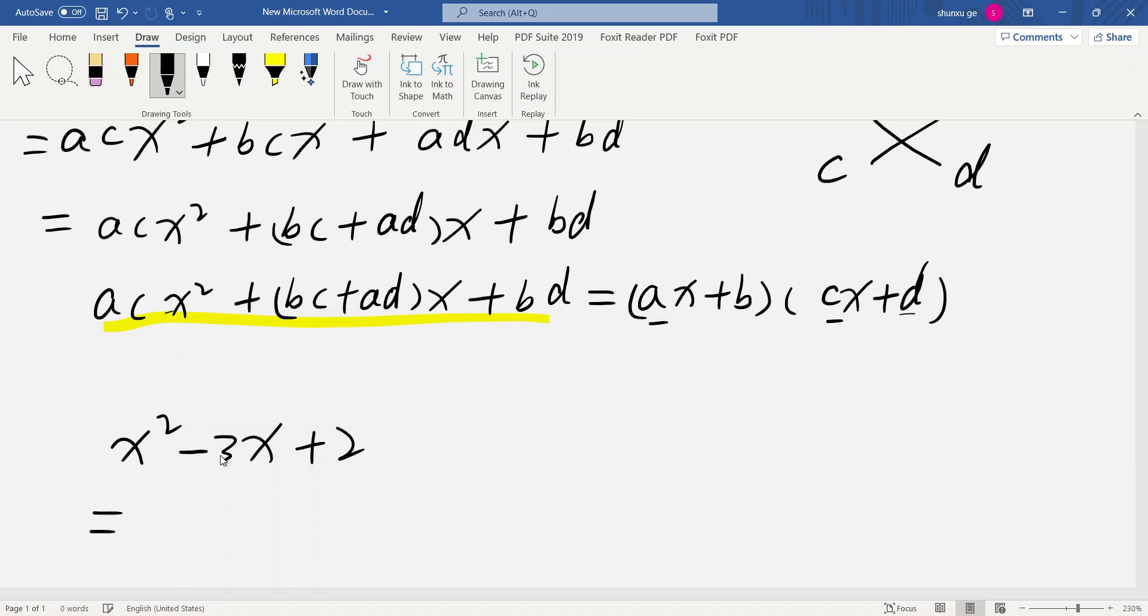This polynomial, so we can equal 1 times 1 is 1 here, and 1 times 2 is 2. But here it's negative, so negative 3x. So negative 1 times negative gives positive 2. But here, 1 times negative 2 plus 1 times negative 1 equals negative 3.